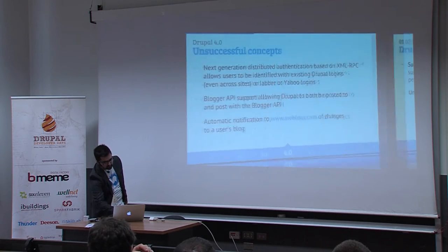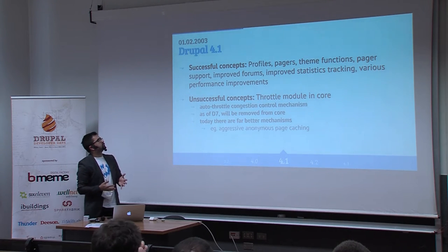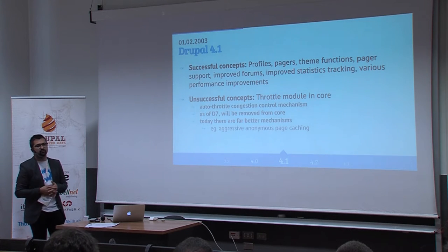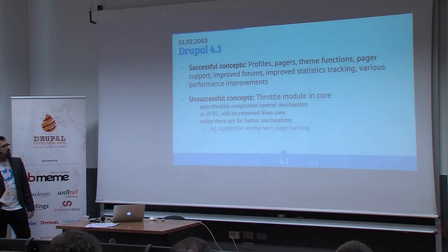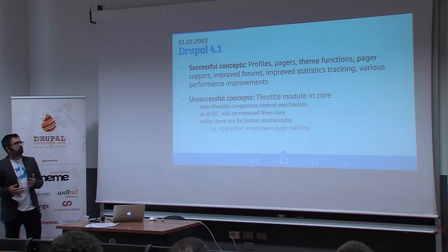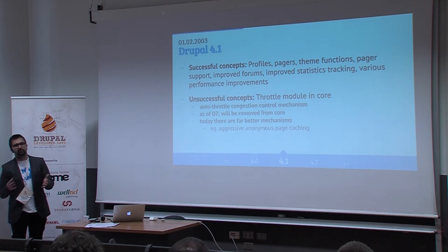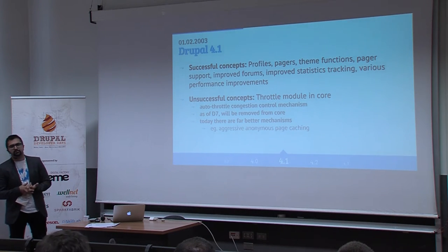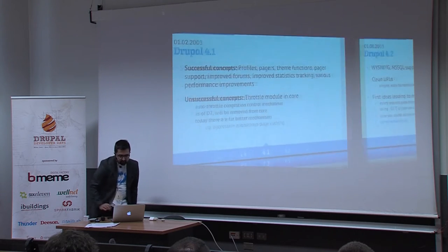It was decided that Drupal would have minor versions like 4.1, 4.2, and so on. In February 2003 we got Drupal 4.1. It added useful things like a profile module so you could add fields to registration forms — though those were hardcoded with no user interface. It also had the throttle module that Jeremy wrote for his conversion: an auto-congestion module that could detect surges in incoming traffic and disable images, blocks, or even modules. As of Drupal 7 this was removed from core, replaced by better tools like aggressive page caching.